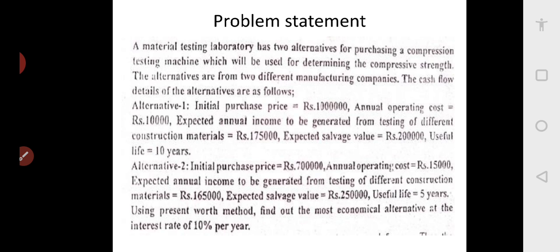There are two compression testing machines: one costing 10 lakhs, another costing 7 lakhs. The first one has operating cost 10,000 rupees per year, the second 15,000 rupees per year. Revenue generation is 1,75,000 rupees per year for the first and 1,65,000 for the second. Salvage value of the first is 2 lakh rupees after 10 years; the second is 2.5 lakh rupees after 5 years. By just looking at it, can you tell which is most economical? We are not able to tell.